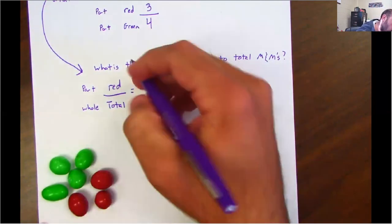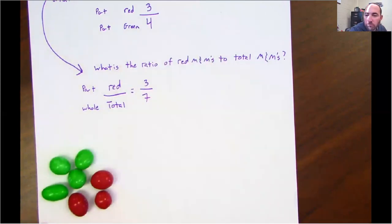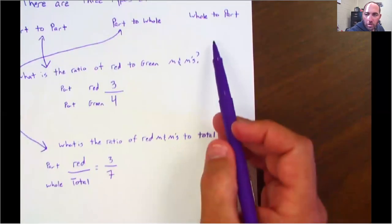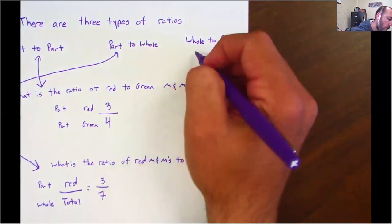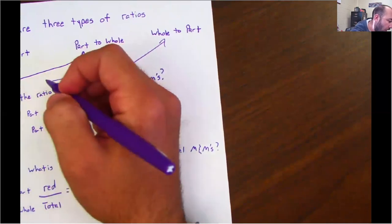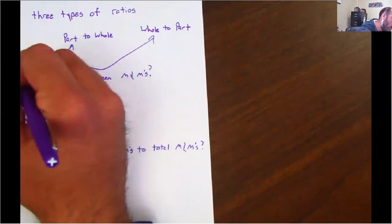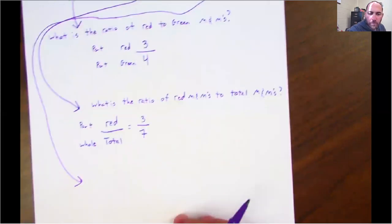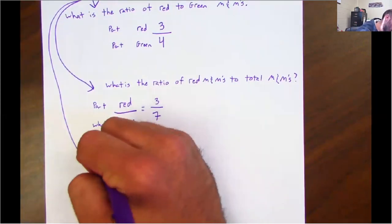How many total? One, two, three, four, five, six, seven. There's your ratio. Now let's do one more. Let's do whole to part. Sorry, guys. I'm making some beautiful drawings here. What is the ratio of total M&Ms to green?